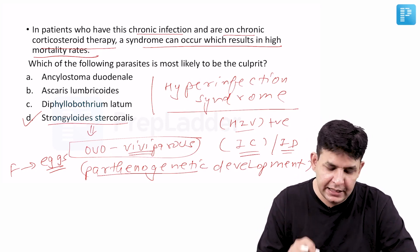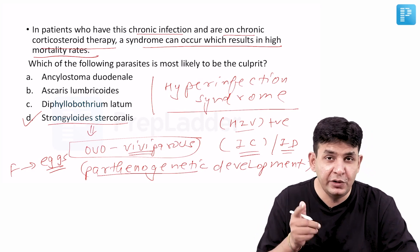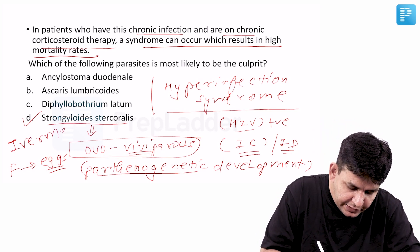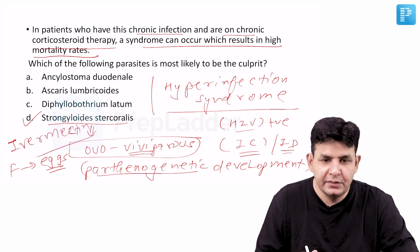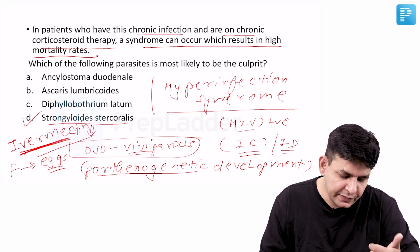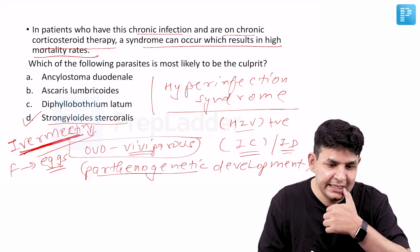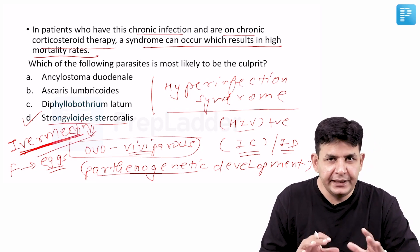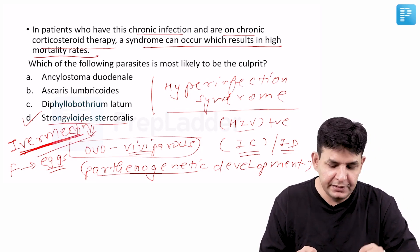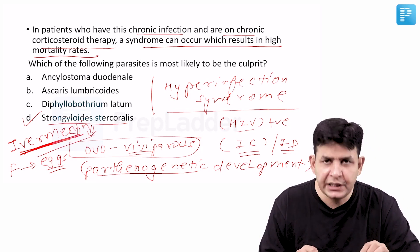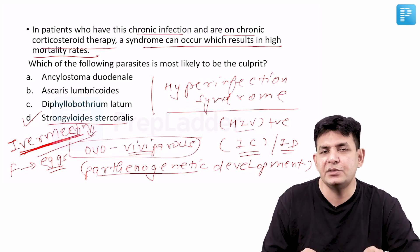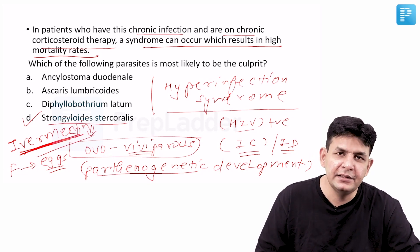For treatment of Strongyloides stercoralis, ivermectin is used. Ivermectin was also discussed in the context of COVID-19, where some studies showed positive results in some patients, though not fully proven. Besides Strongyloides stercoralis, the other worm for which ivermectin is also the drug of choice is Onchocerca volvulus.